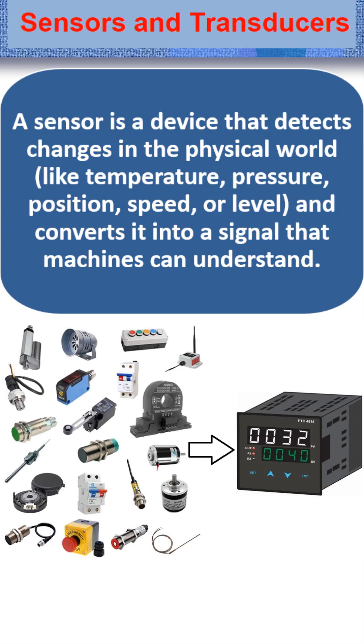In automation, sensors constantly monitor the condition and send real-time data to controllers. And according to that data, controllers take the decision.